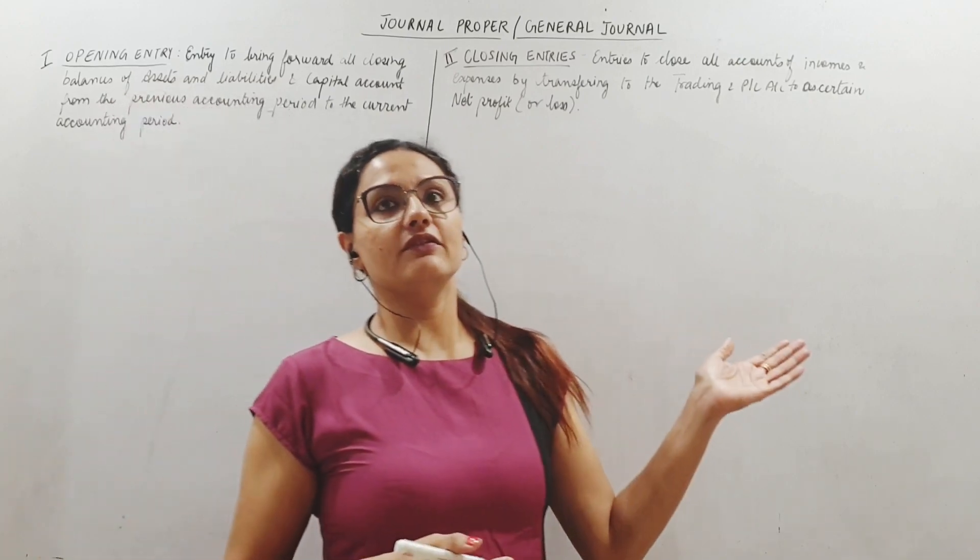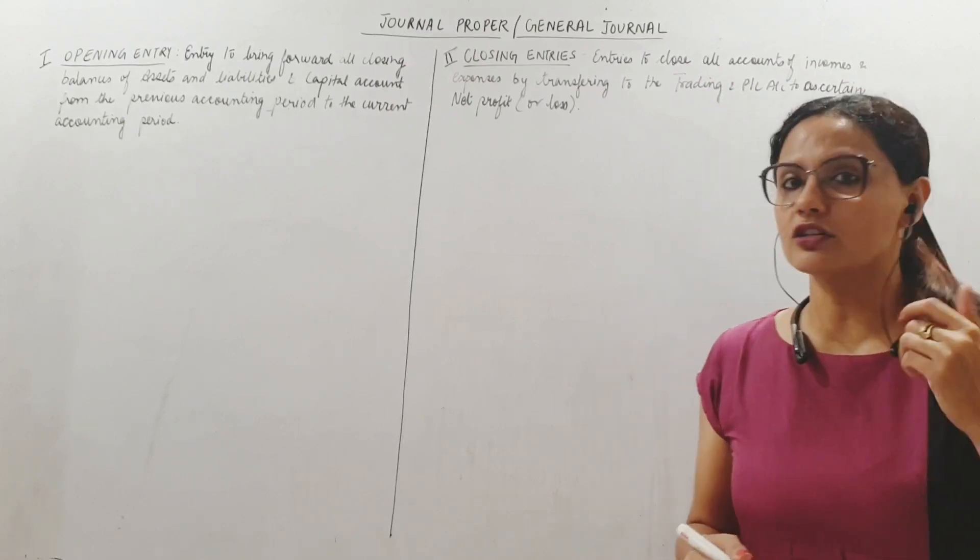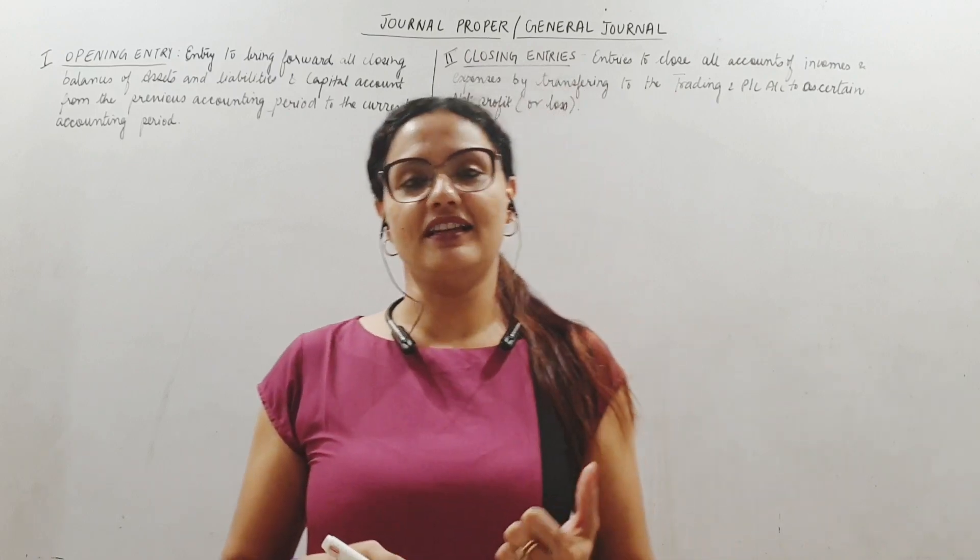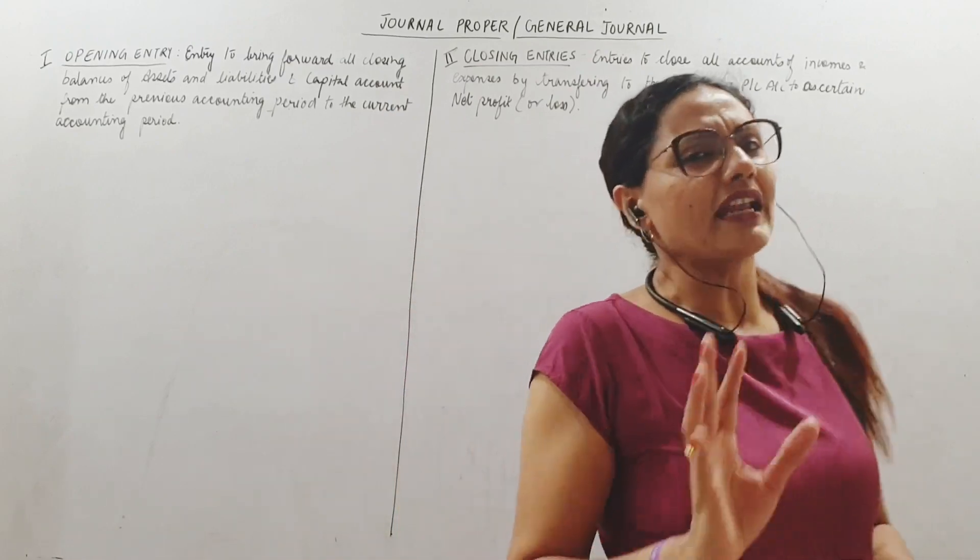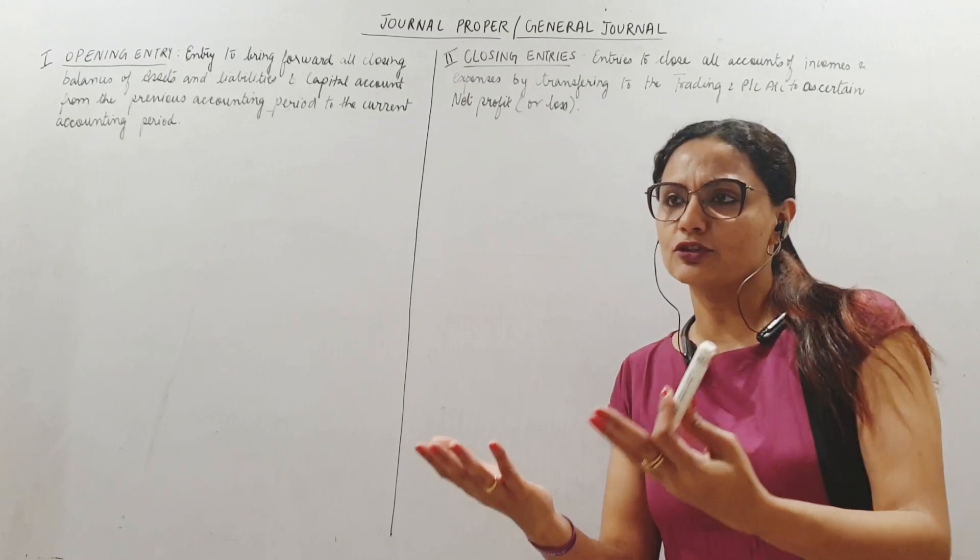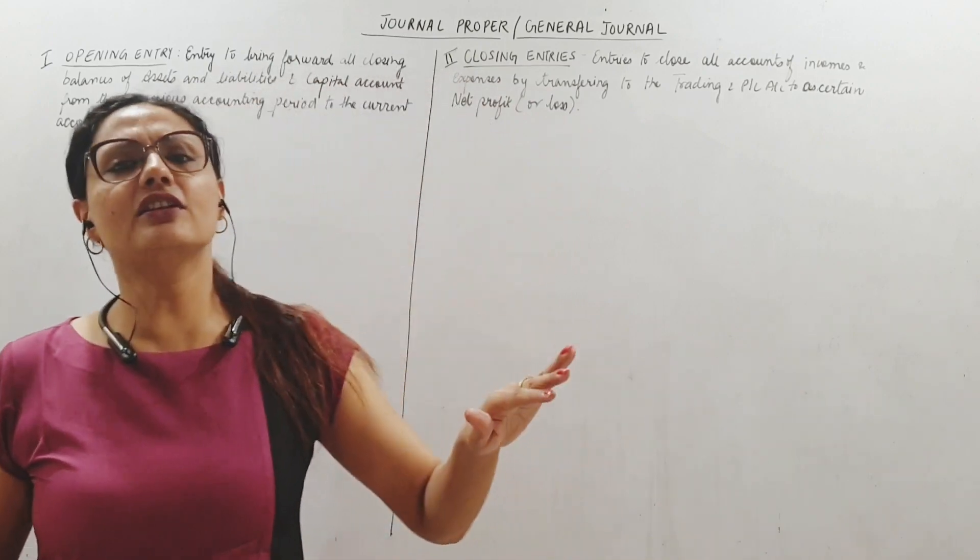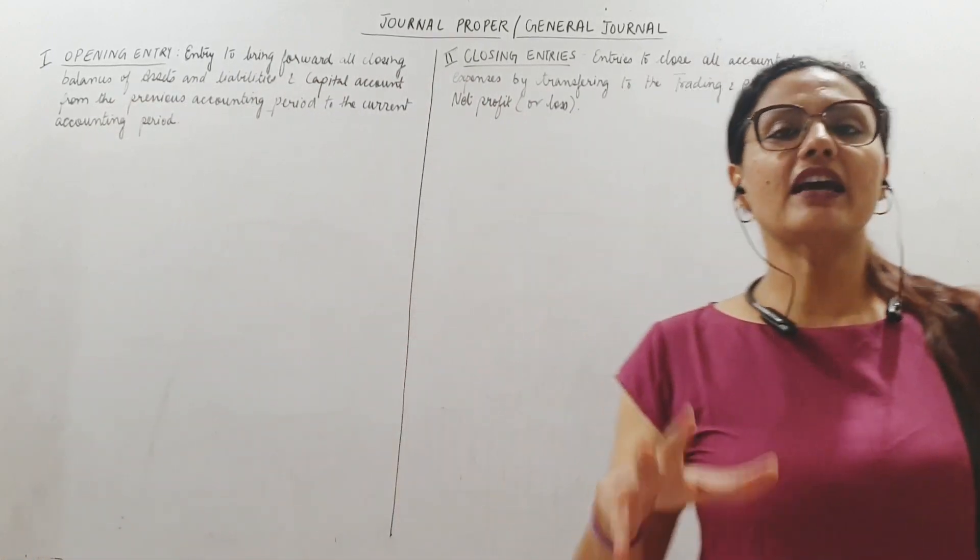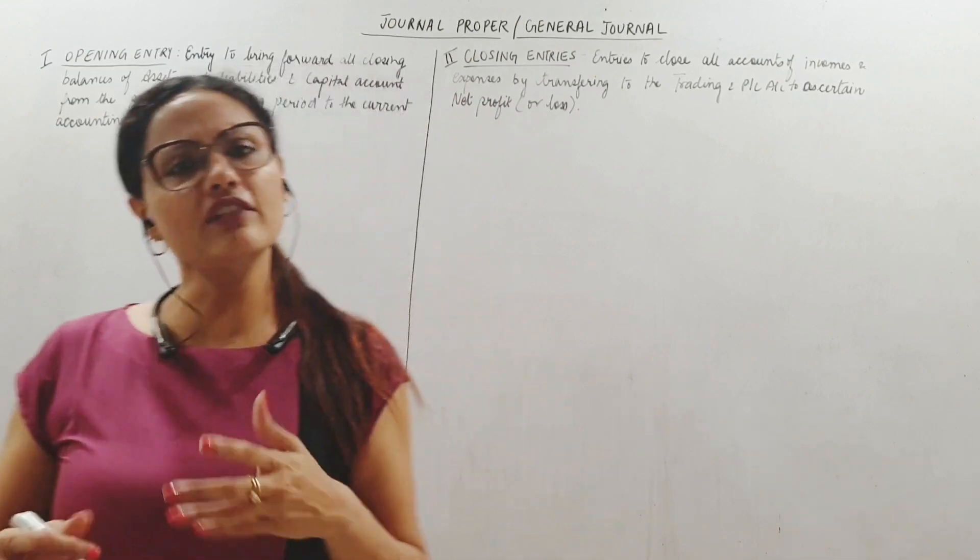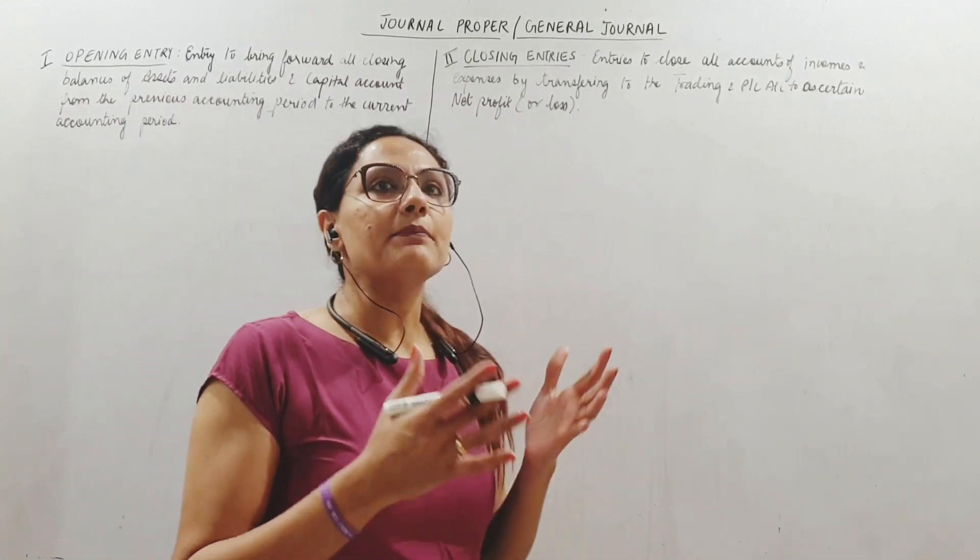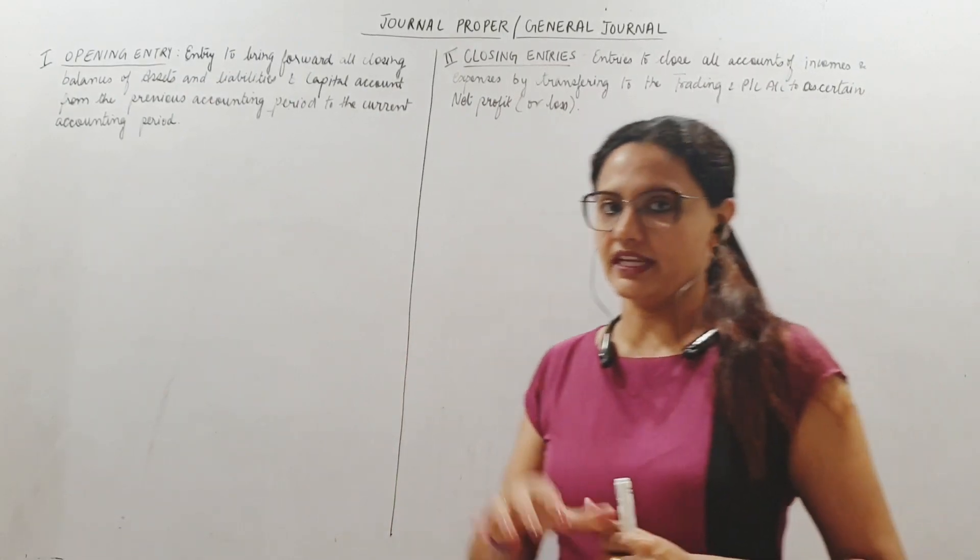In this we have various types of entries. Now you all know that all the previous other books have been designed specifically to record certain transactions, like the purchase book records only credit purchase of goods. Now journal proper records all the residual entries which do not actually fit into the other books. So entries that are not in other places will find a place here.